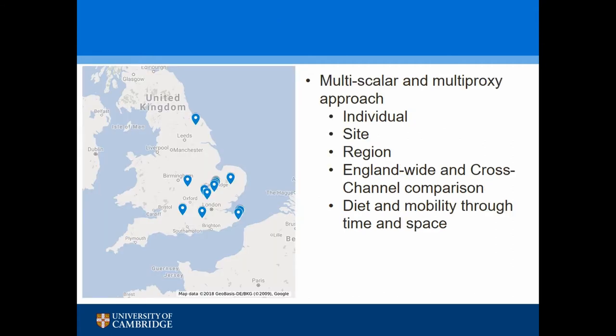Apologies after Emma's beautiful GIS for my hastily assembled Google map, but this roughly shows the spread of my sites across Britain. This is where I'll be looking at individuals across their life course, at the site and population level, feeding up to regional analyses — because environment plays a big role in what you eat — and then comparing with all the other sites in my meta-analysis.